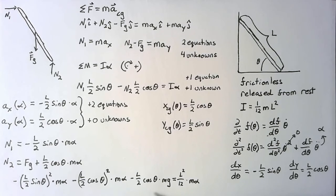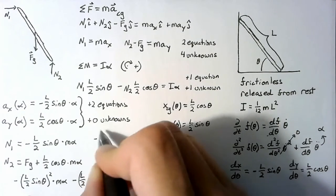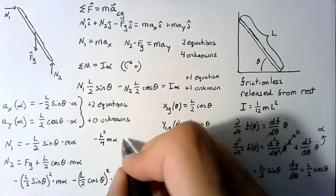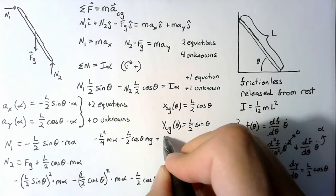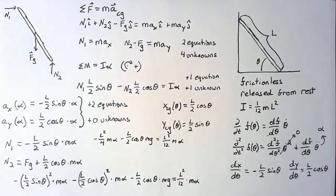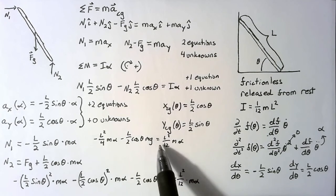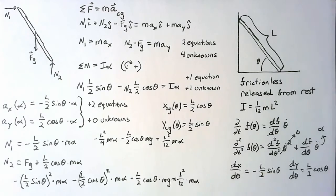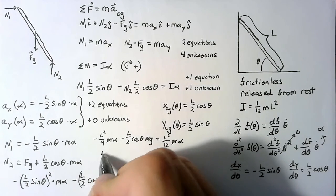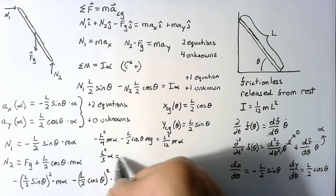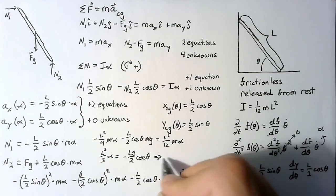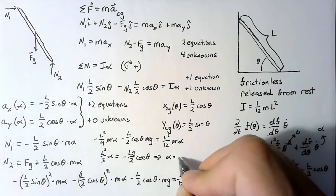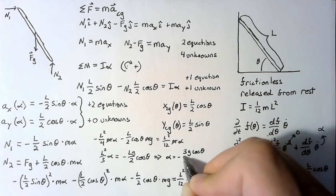We have a sine squared and a cosine squared, which combine to give negative L² over 4 times m alpha, minus the gravity term L over 2 cosine theta times mg, equal to L² over 12 times m alpha. Adding L² over 4 to both sides and canceling mass, we get L² over 3 times alpha equals negative L over 2 cosine theta times g. Solving for alpha: alpha equals negative 3g cosine theta divided by 2L.